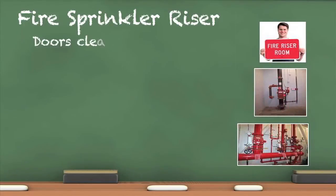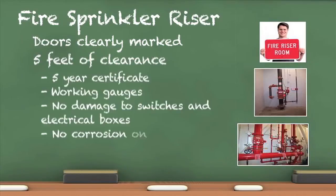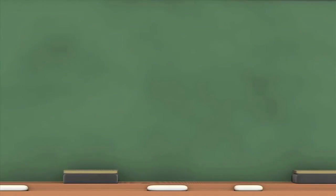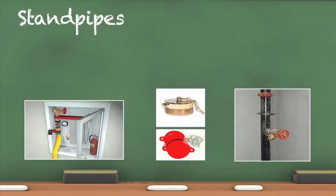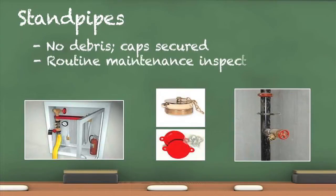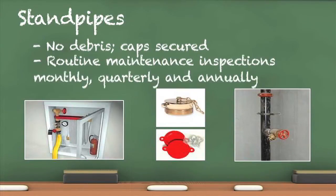Doors to riser rooms should be clearly marked and the rooms themselves free of storage. The equipment is required to have at least 5 feet of clearance in all directions. The 5-year certification sticker is required to be affixed to the riser. Nothing can be attached to any portion of this system at any time. Interior standpipes have the same requirements as exterior standpipes — there should be no debris inside the inlet and caps must be securely affixed. Nothing can be attached to any component of this system.